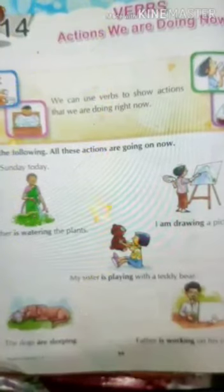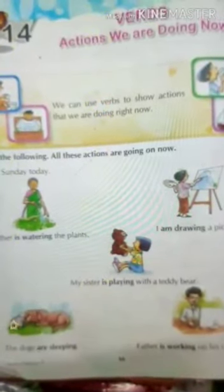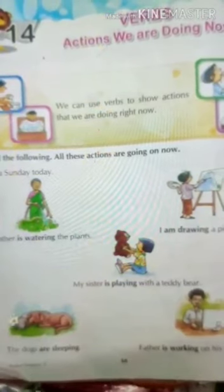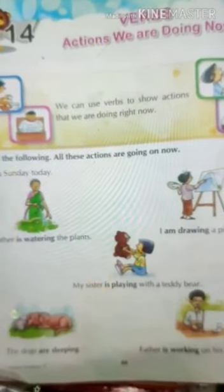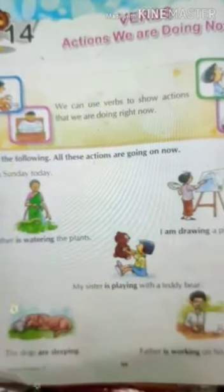In this picture you can see children. Verbs — actions we are doing now. We can use verbs to show actions that we are doing right now. Here in this picture you can see — read the following. All these actions are going on now.